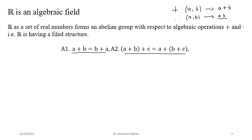When we perform a binary operation, we always need two elements. In property A2 we have three numbers a, b, and c. So we take any two first, perform the addition, then apply the result with the third. The associative property says: (a + b) + c = a + (b + c). Simply put, the bracket is not material — any two you can take first, and the result will be the same.